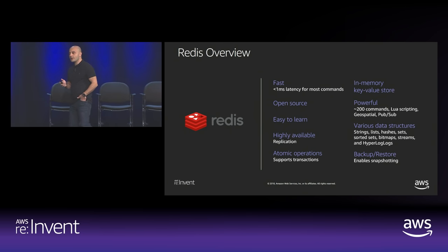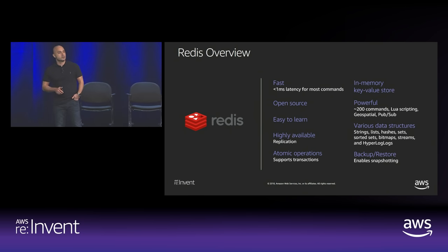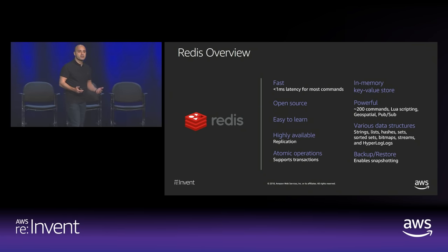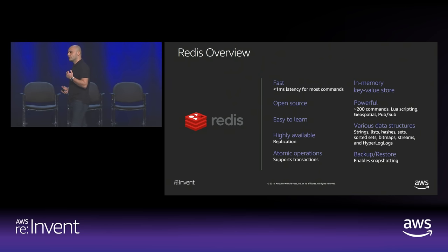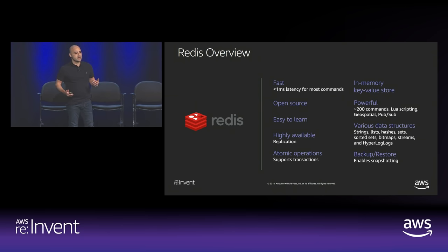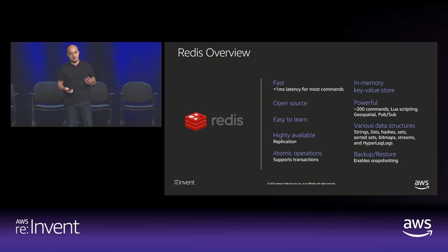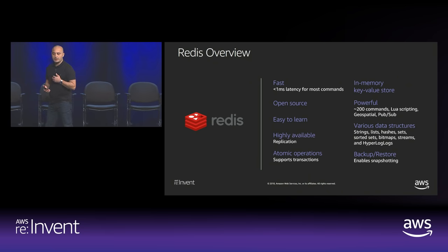What is Redis? Redis is the most popular in-memory key-value store in the market. It's so popular for a lot of reasons — in addition to the speed, you can see sub-millisecond performance; on average we see somewhere in the neighborhood of 400 to 500 microseconds. You also have HA, backup and restore, and atomic operations that Memcached doesn't have.